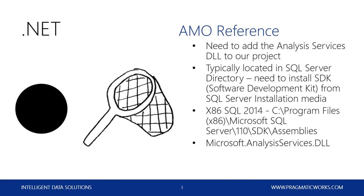The first thing we do when getting going with AMO is to add the Analysis Services DLL to our project. That's typically going to be located in your SQL Server directory. You need to install the SDK when installing SQL Server, or you can revisit that and install it later with the installation media. As an example, the x86 SQL 2014 path to that DLL will be: C:\Program Files (x86)\Microsoft SQL Server\110\SDK\Assemblies, and the file is named Microsoft.AnalysisServices.dll.